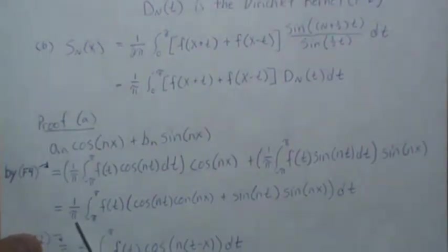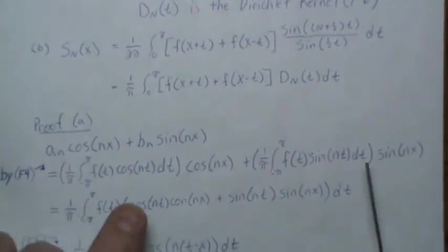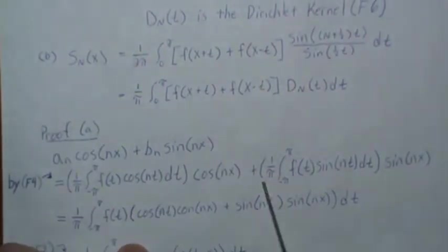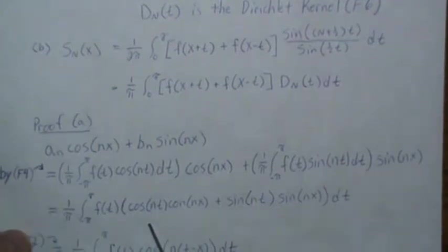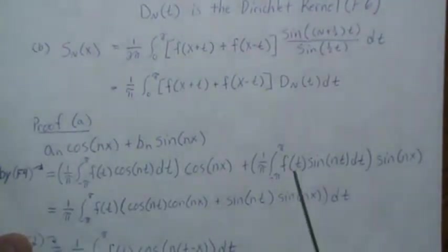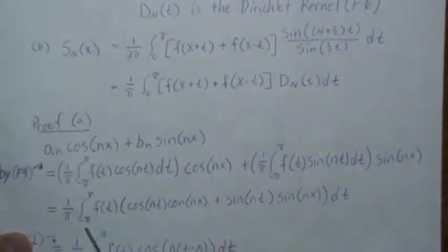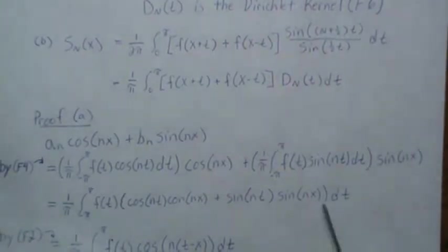The one over π we can factor out. When we combine this plus this under the same integral, we get this where f(t) is factored out and the rest of it is right here.